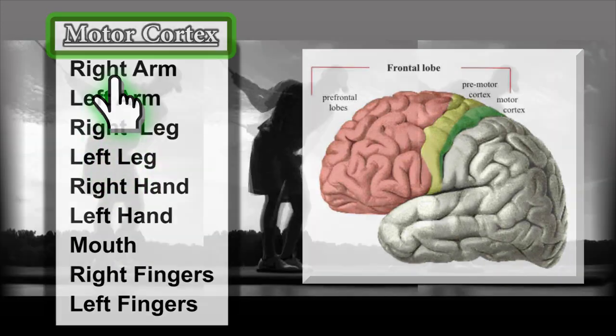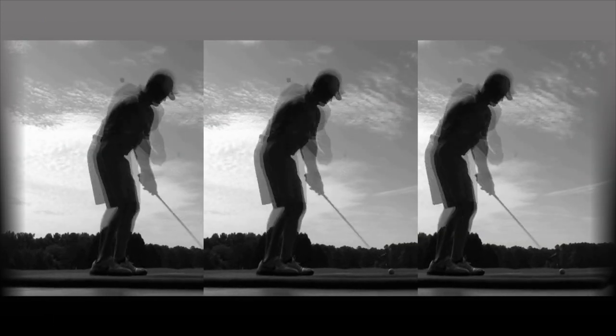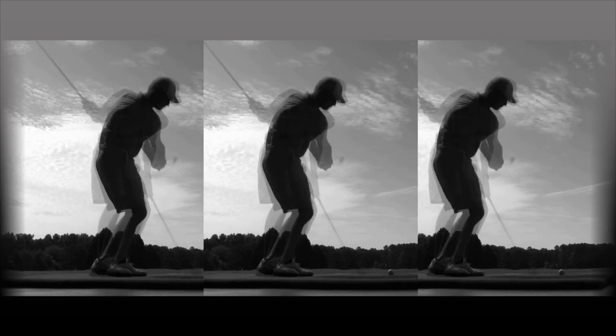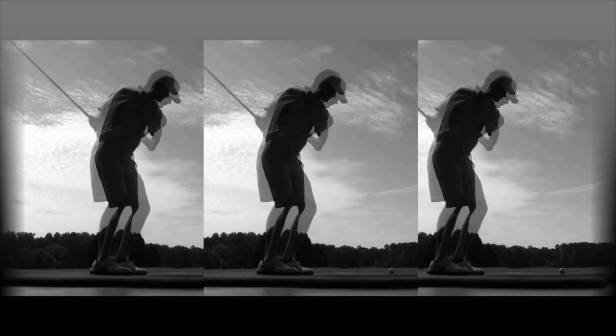However, the process doesn't end there. After an automatic neural pathway has been activated, the real powerhouse of the brain takes over, the cerebellum.